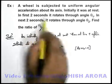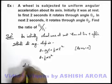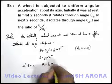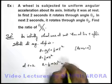We are given that in the first 2 seconds it rotates through an angle theta 1. At t equals 2, theta 1 equals half alpha into 2 square, which is 2 alpha.